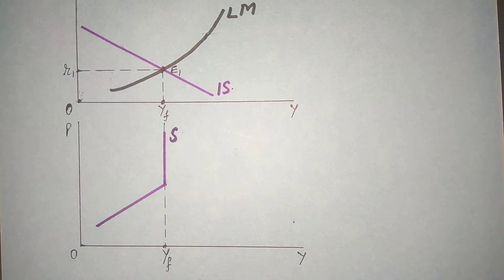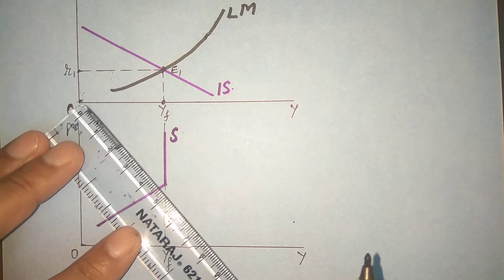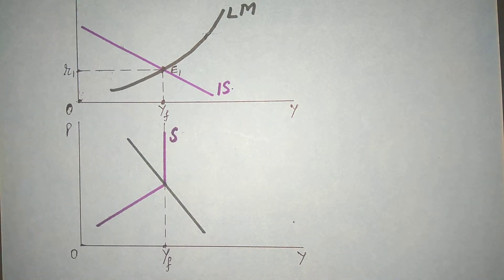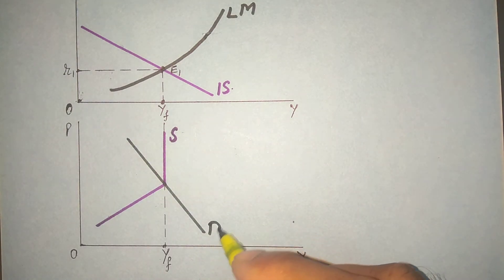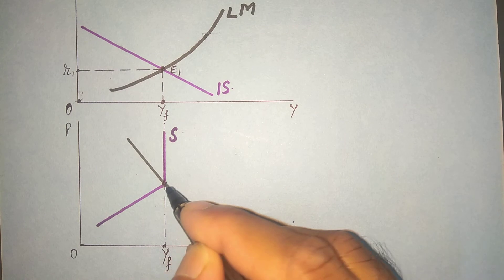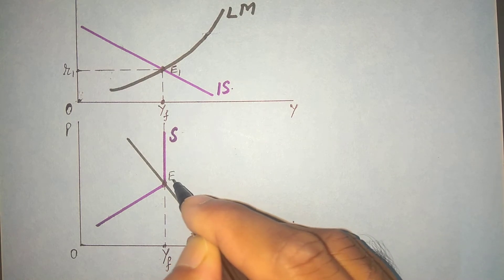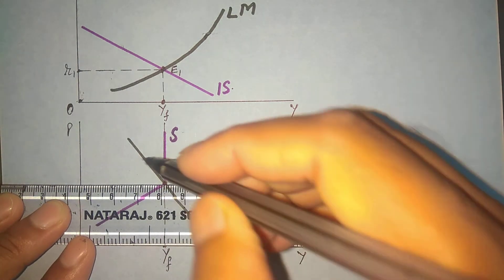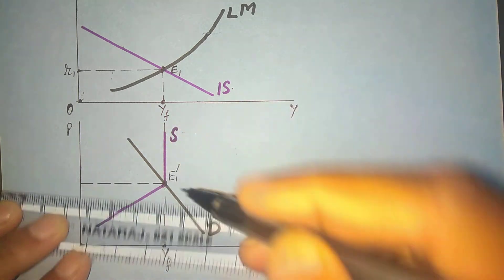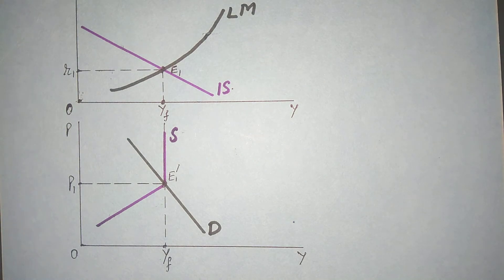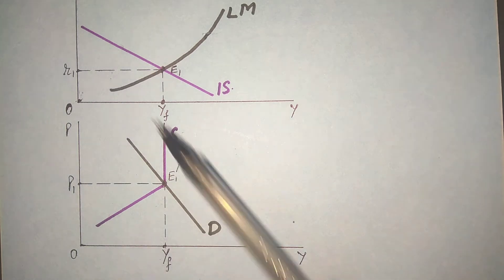In the lower panel of the diagram, suppose this is the demand curve D. With the help of demand and supply you can see the equilibrium point, suppose E1 dash, and this is the equilibrium level of prices, suppose P1. This is the initial equilibrium — in the upper panel the IS-LM equilibrium is here, and in the lower panel the demand and supply equilibrium is here.